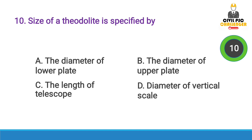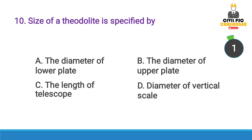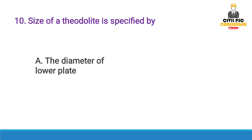Next question: The size of a theodolite is specified by — Answer option A, the diameter of the lower plate.